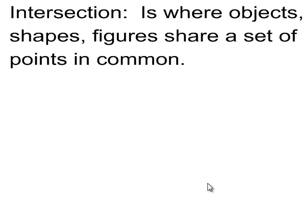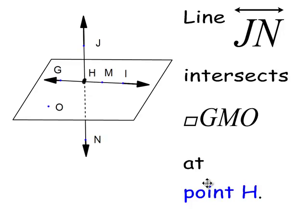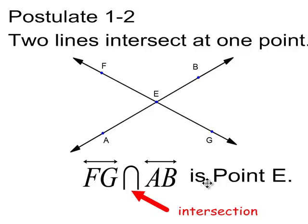We need this definition before we go to the next postulate. An intersection is where objects or shapes or figures meet, what they have in common. So, here's a picture. Line J, N intersects plane GMO at point H. So, postulate 1-2 is talking about intersections. Two lines intersect at one point. So, FG and AB have a common point where they meet is point E. And if we're going to use set notation, I've got FG with the arrow showing a line segment, AB showing a line segment. And this here, this upside down U in set notation means intersection. So, this literally means line FG intersects line AB, and I should say at point E. And I'm using capital letters for the point.